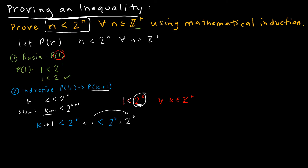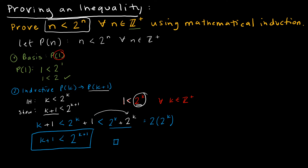So now I've got k plus 1 on the left side, and on the right side I have 2k plus 2k, which is essentially two 2-to-the-k's, which is 2 to the k plus 1. You might be upset and wonder where that came from — it's just a matter of practice. That's why I always want to know where I'm headed, so I know what kind of math magic I need to pull to make this thing work.